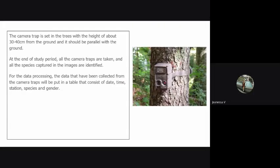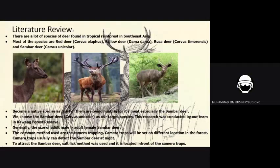The camera trap is set in the trees at a height of about 30 to 40 cm from the ground, and it should be parallel with the ground. For data processing, the data collected from the camera traps will be recorded in a table consisting of date, time, station, species, and gender.